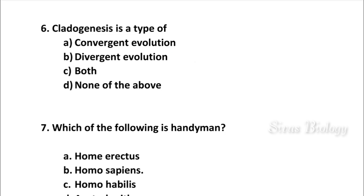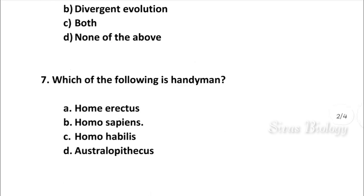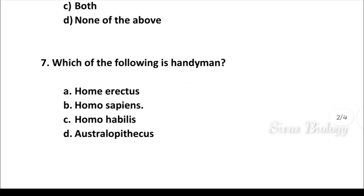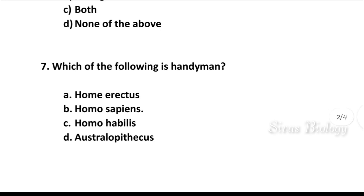Question number 7: Which of the following is the handyman? Options: Homo erectus, Homo sapiens, Homo habilis, Ocelopithecus. The correct answer is Homo habilis.